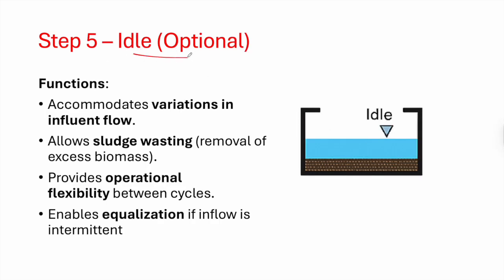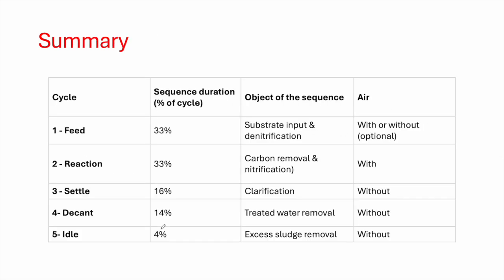The idle stage is optional and primarily used in medium-scale projects. It accommodates variations in influent flow, allows sludge wasting to remove excess biomass, provides operational flexibility between cycles, and enables equalization when inflow is intermittent.